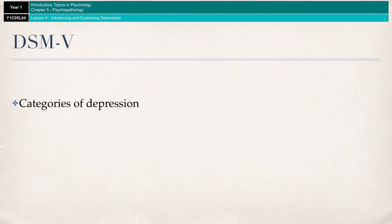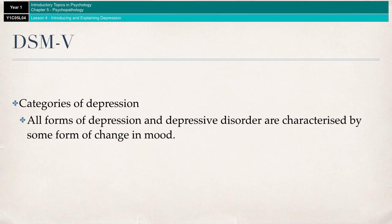Very briefly then, depression, according to the DSM-5, which is the Diagnostic Statistics Manual, is classified as a mood disorder. The DSM-5 distinguishes between different types of depression, but all of the types of depression and depressive disorders are characterized by some form of change in mood.